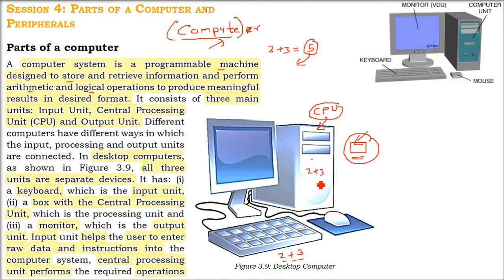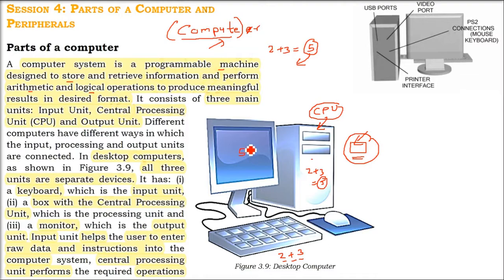Now this 2 plus 3 goes inside your CPU. All the operations are done. And then 5 comes out. So, how to see this file? You need to have an output device.